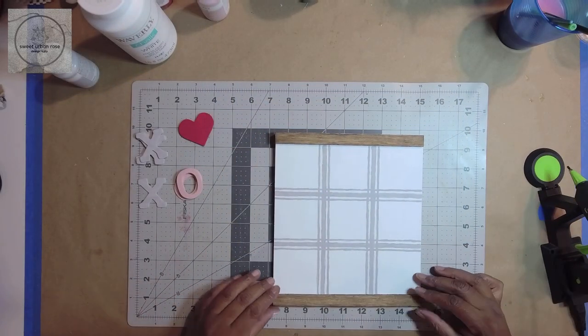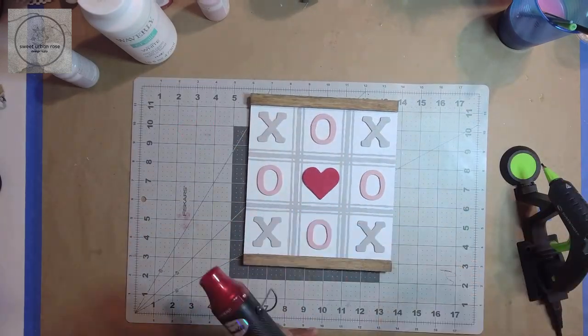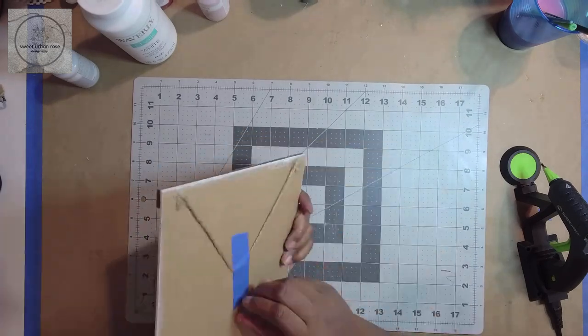Next, I glued down the bottom piece of the board and then the X's and O's and the heart. And this piece is complete.